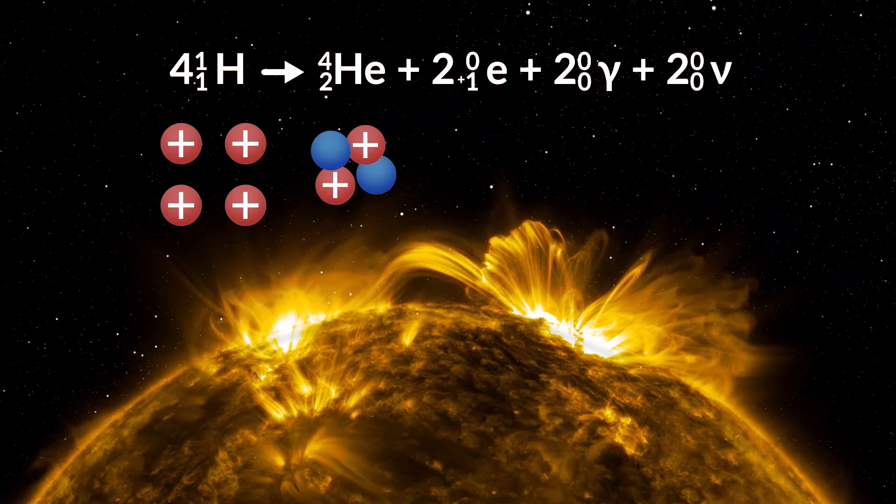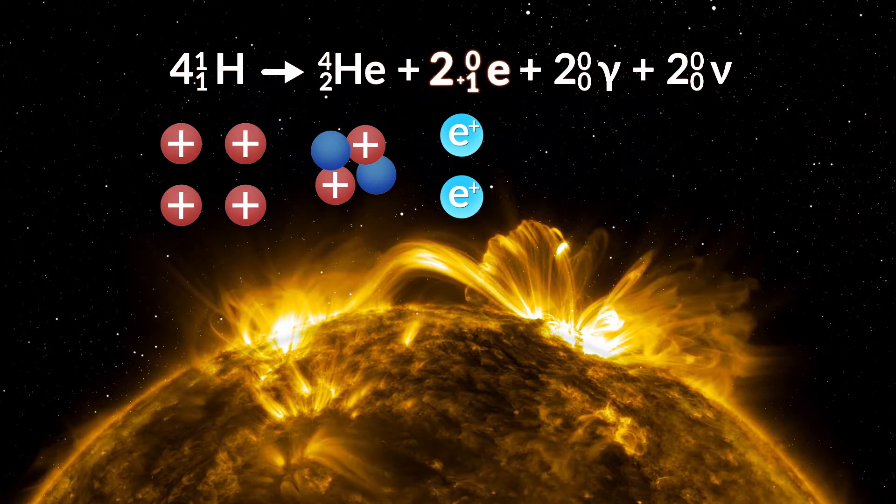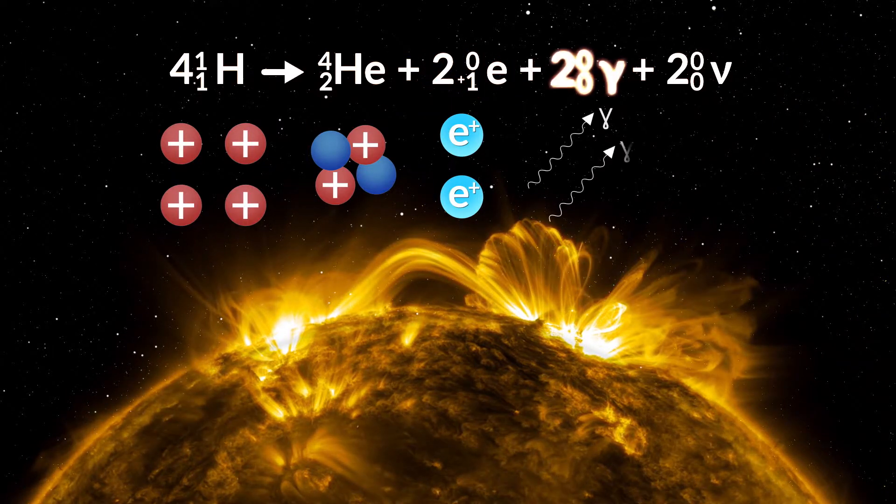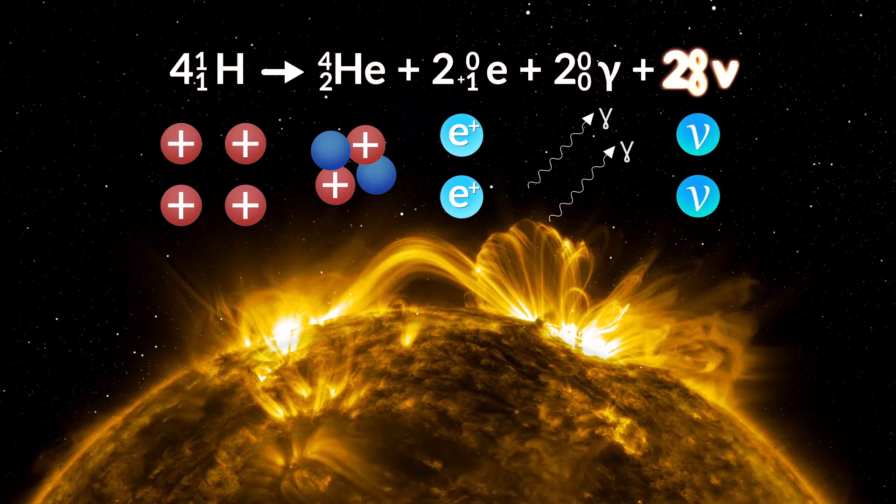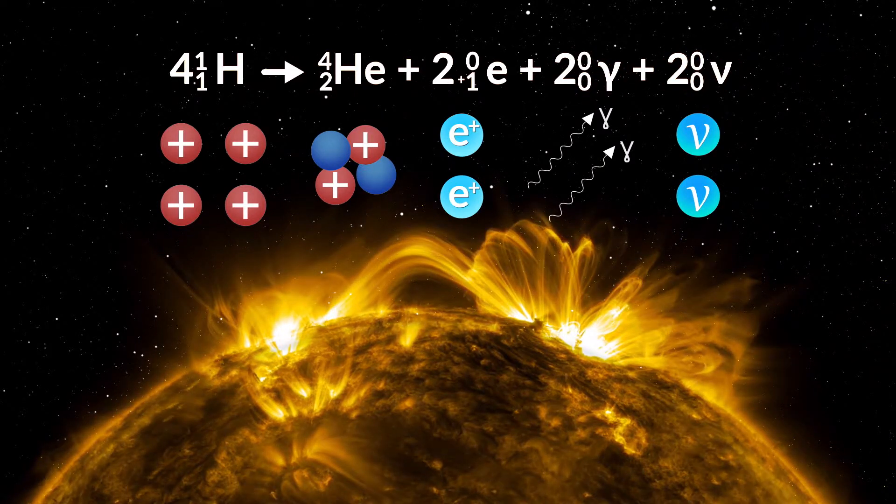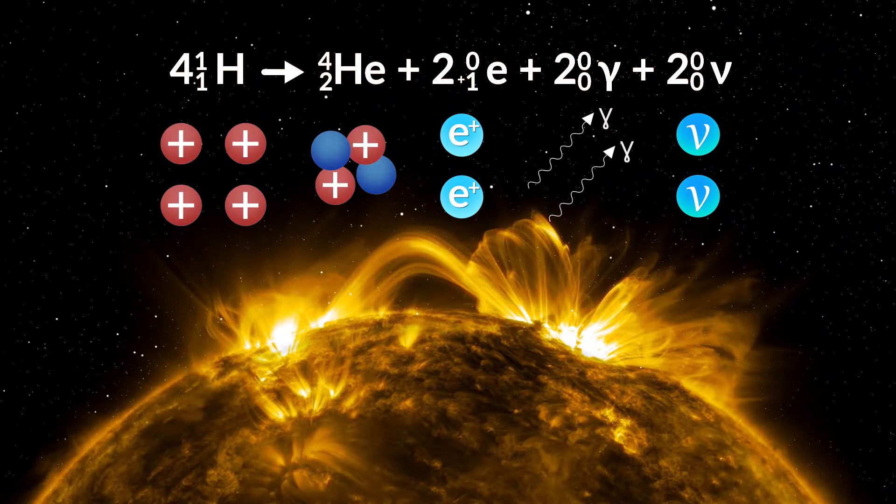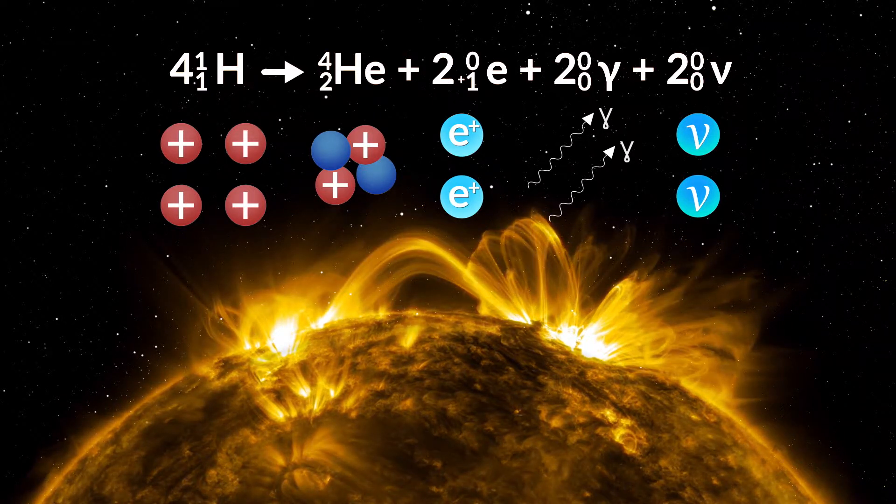The byproducts consist of two positrons. Positrons are identical to electrons, but with a positive charge. Two gamma rays and two neutrinos. Neutrinos are extremely small particles with a neutral charge. They typically pass through matter undetected. Neutrinos are often byproducts in nuclear reactions.